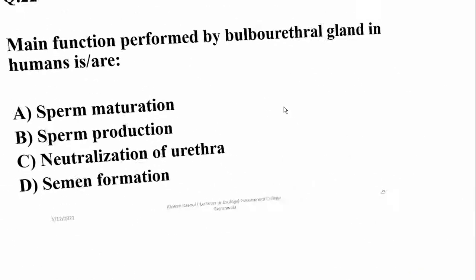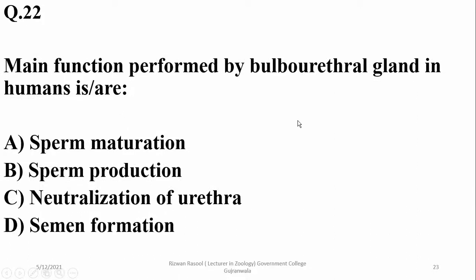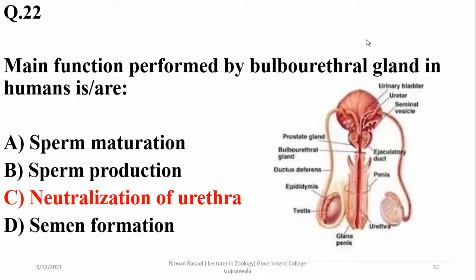Question number twenty-two: the main function performed by the bulbourethral gland in humans is the neutralization of the urethra. It is located at the base of the urethra to neutralize it, because the urethra is mostly acidic due to acidic urine and requires neutralization before ejaculation or release of sperms.